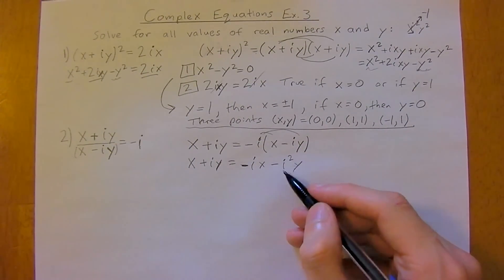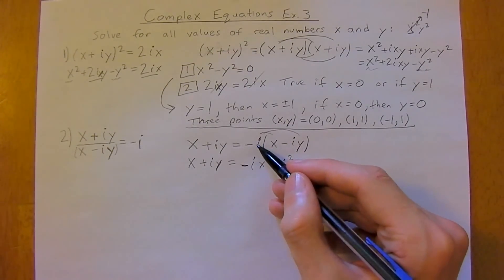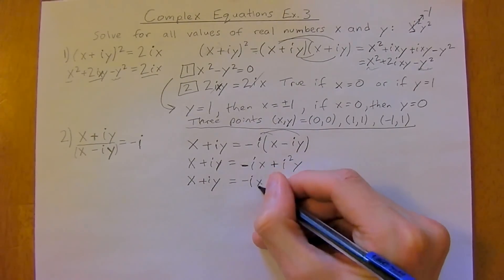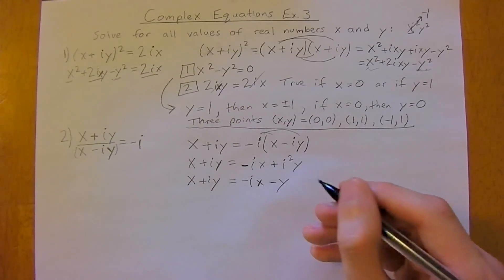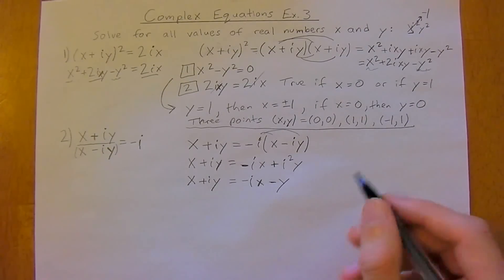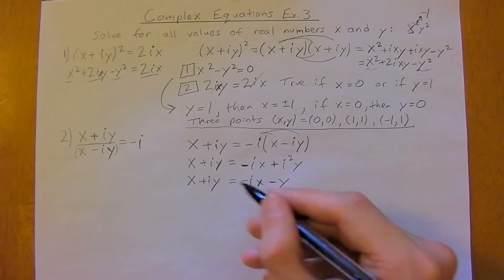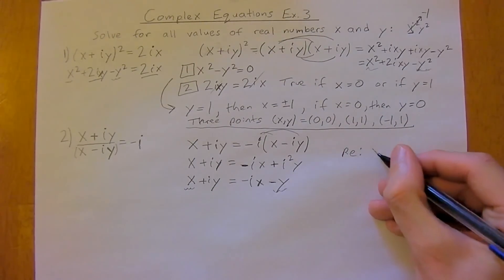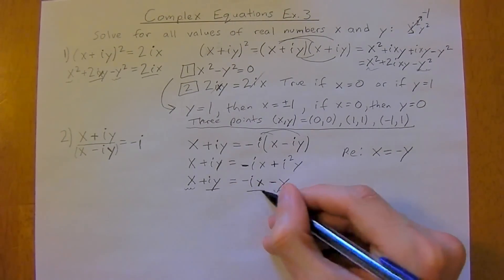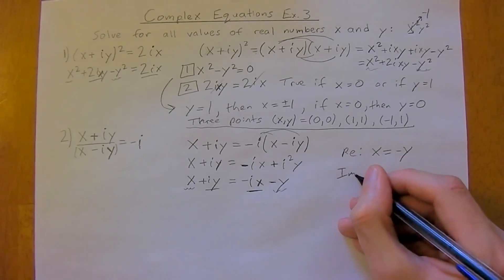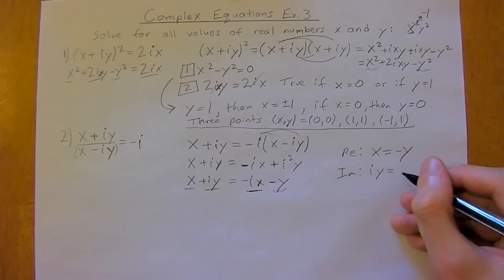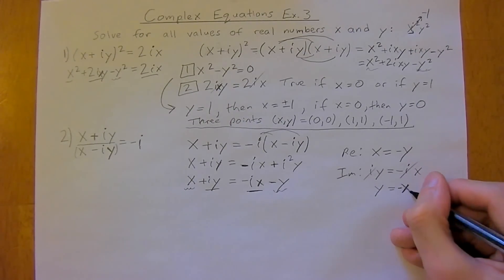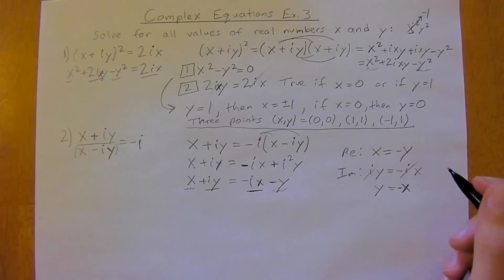Multiplying it out, we're going to be left with negative IX minus I squared Y. Since I squared is negative 1, this term becomes positive, so we have: X plus IY equals negative IX minus I squared Y, which gives us negative IX plus Y. Then we equate the real and imaginary terms separately. The real part gives us X equals negative Y.